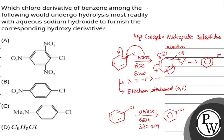Now we have 4 substrates given. We need to find which one reacts most easily. In option A, with respect to chlorine, there are groups at ortho, meta, and para positions — 3 electron-withdrawing groups total. In option B, there is only 1 electron-withdrawing group. More EWGs better stabilize the negative charge, so A stabilizes it better than B. Therefore B is incorrect.